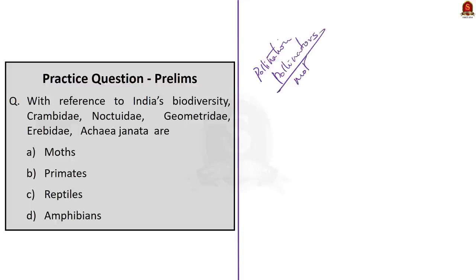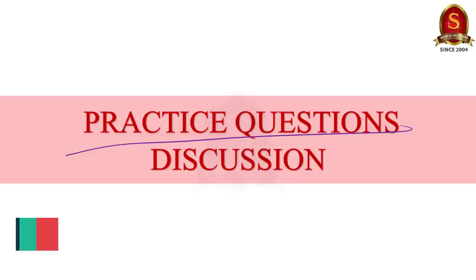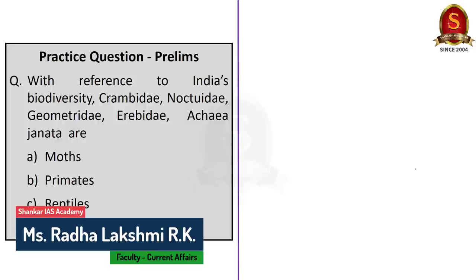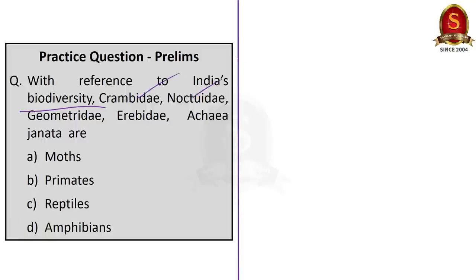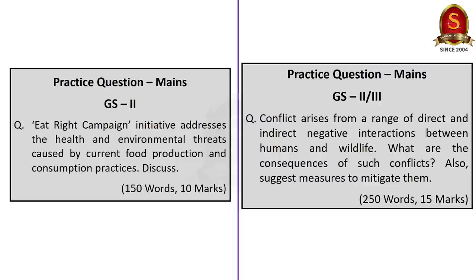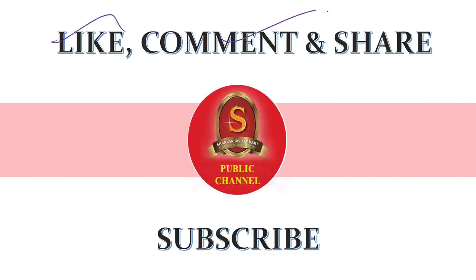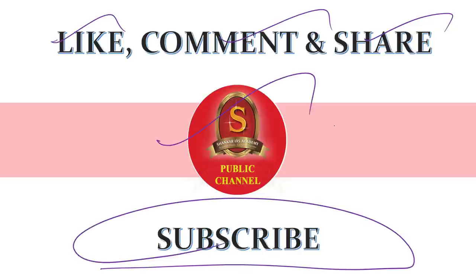Today we have one preliminary practice question. With reference to India's biodiversity, Crambidae, Noctuidae, Geometridae, and Arctiidae are the names of which group? Option A: moths; Option B: primates; Option C: reptiles; Option D: amphibians. The correct answer is Option A — moths. These are different types of moth families found in India's biodiversity. Main questions are displayed on screen — please write an answer and post it in the comment section. With this we came to the end of today's news article discussion. If you like the video, please like, comment, share, and subscribe to Shankar IAS Academy YouTube channel.